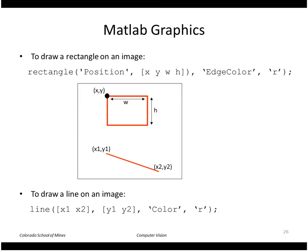We can draw a rectangle around each blob using a rectangle call, where we pass in the starting upper-left corner and the width and height of the rectangle. We can also draw lines on the image using the line function, where we simply provide the two endpoints of the line.